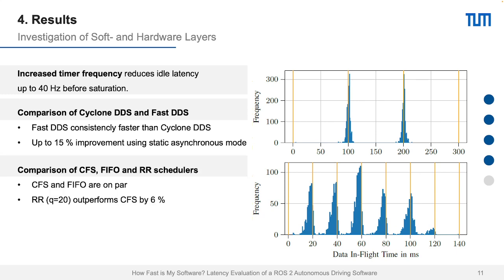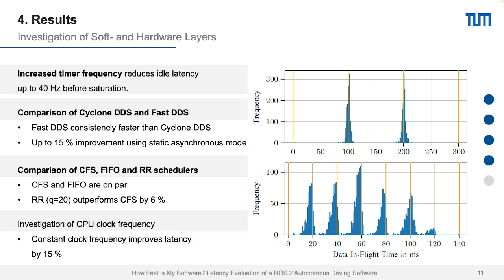Third, we compared different schedulers — FIFO, round-robin, and CFS — and showed that round-robin outperforms CFS by around 6%. Last but not least, we investigated CPU clock frequency and showed that a constant clock frequency improves latency by up to 15%, highlighting a wide variety of areas where latency can be improved.